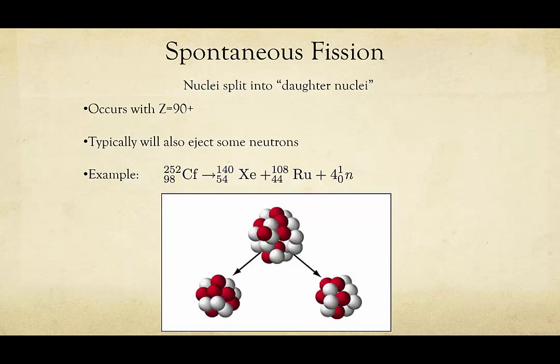Generally when this happens there will also be some neutrons ejected. I have one example of a fission reaction shown here where we have Cf splitting into two daughter nuclei and also four neutrons. I'm drawing special attention to these four neutrons because this lets something else occur that's relatively important to note.